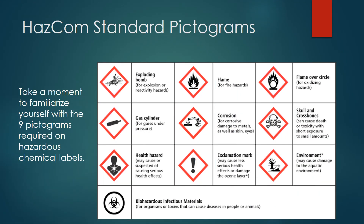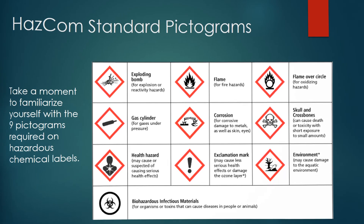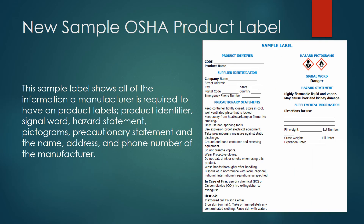Let's take a moment to familiarize yourself with the 9 pictograms required on hazardous chemical labels. Here we have included all 9, even though OSHA has only adopted 8 of these — it is best practice to understand all of them. This sample label shows all of the information a manufacturer is required to have on a product label: product identifier, signal word, hazard statement, pictograms, precautionary statement, and the name, address, and phone number of the manufacturer.